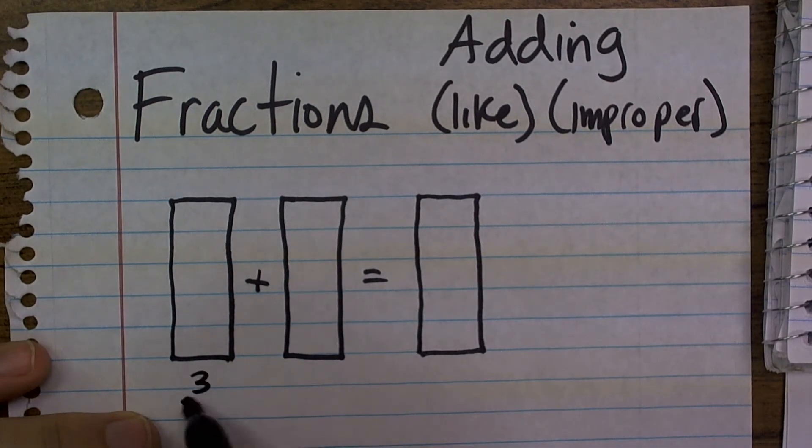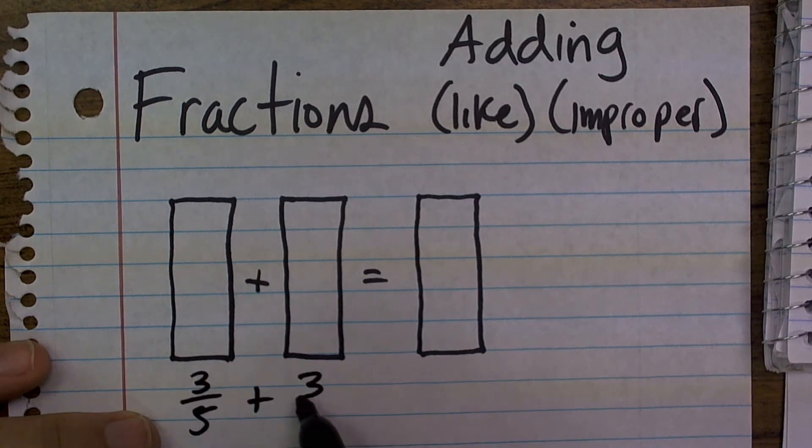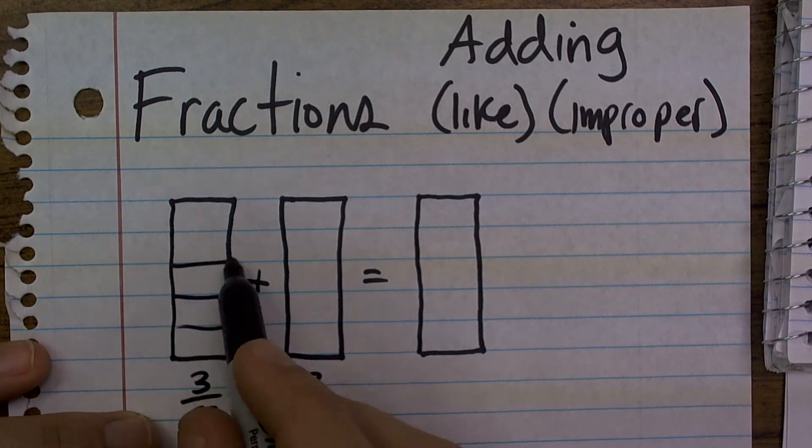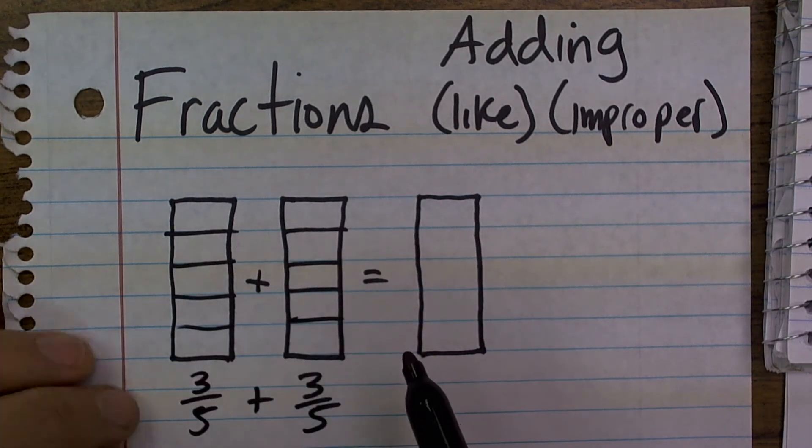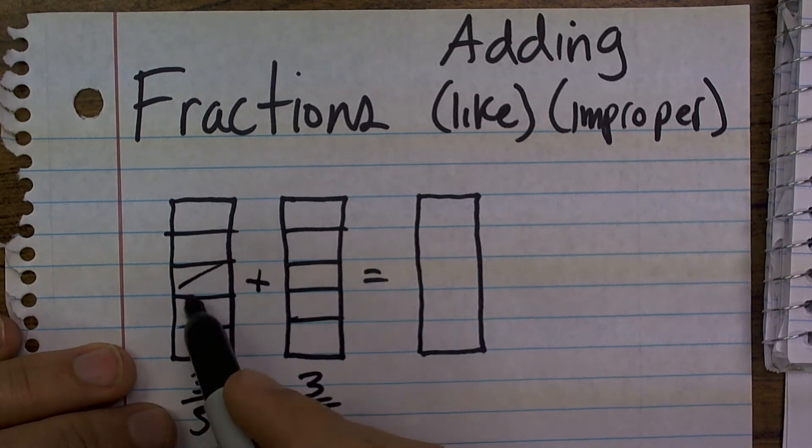Let's do 3 fifths plus 3 fifths. Now remember, fractions, our denominator is going to tell me how much I'm going to evenly section away my whole bar. And then 3 is going to tell me how many parts I'm going to select.